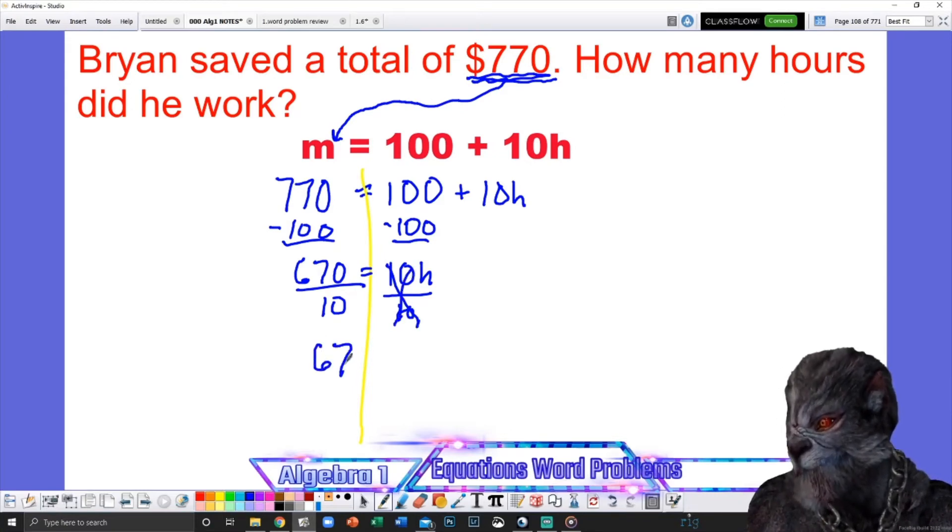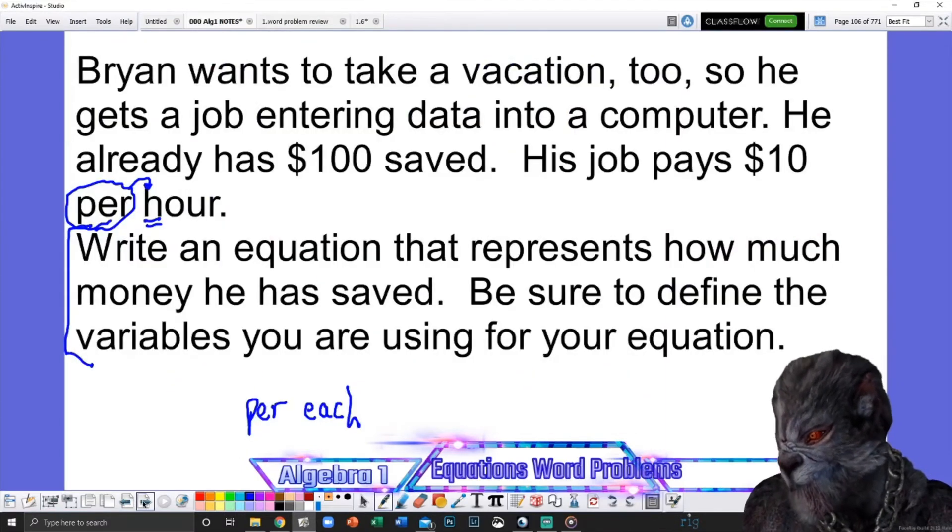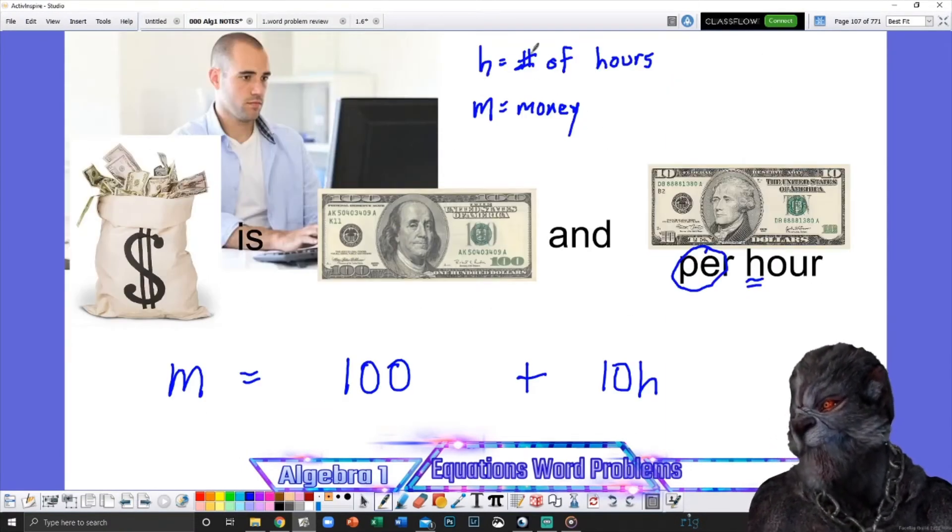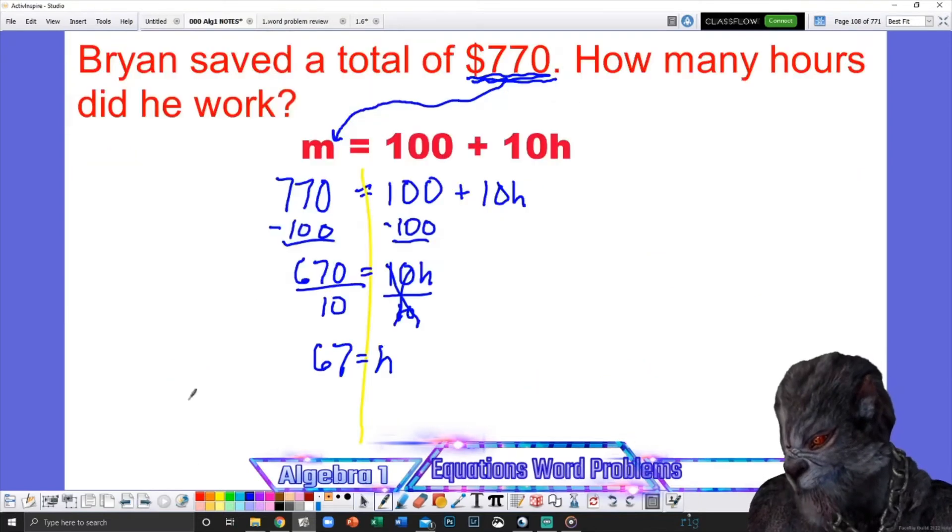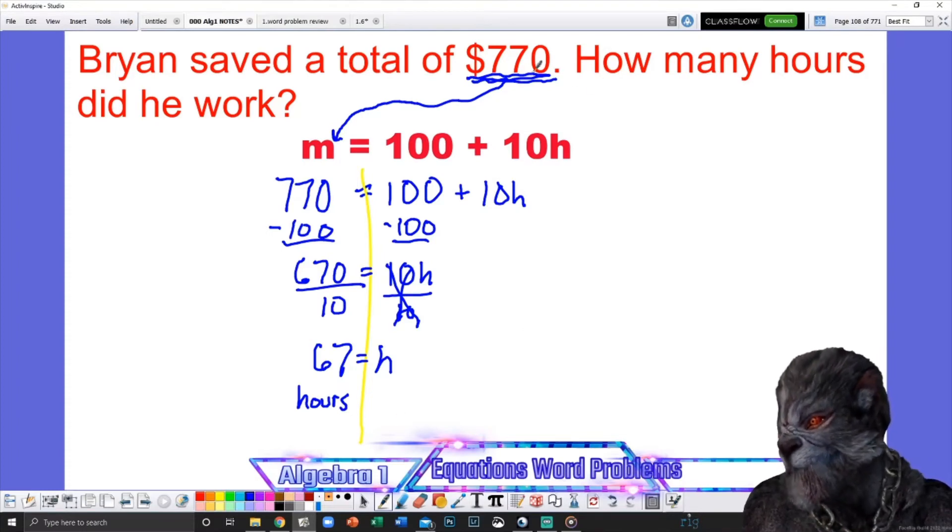So $770 is money. And then I'm going to copy this. And now we're going to do what we've been doing all along. So I'm going to do this part kind of fast. This was 100. So I'm going to minus 100 from both sides. That gives me 670. On the right side, I have 10 touching my H. I don't want anyone touching my H. So I'm going to divide both sides by 10. Those cancel. This leaves me with 67 equals H. What did H stand for? I'm glad you asked. It's right here. H was number of hours. So because it's number of hours, this means 67 hours is how long Brian has to work in order to make his $770.